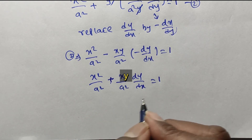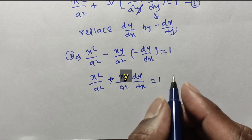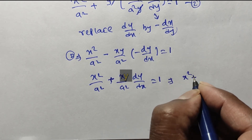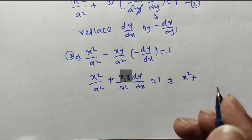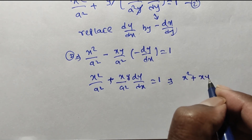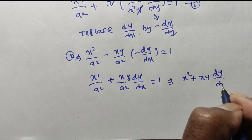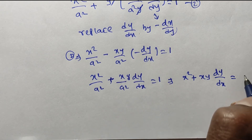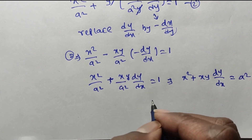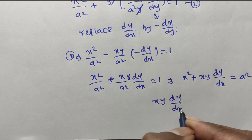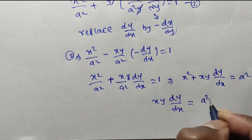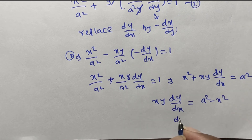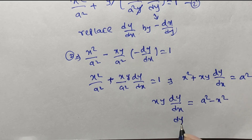Taking a² as common and moving it to the right side: x² + xy · dy/dx = a². Simplifying: xy · dy/dx = a² − x². Now we can apply the variable separable method. The dy side has y, so we separate variables.